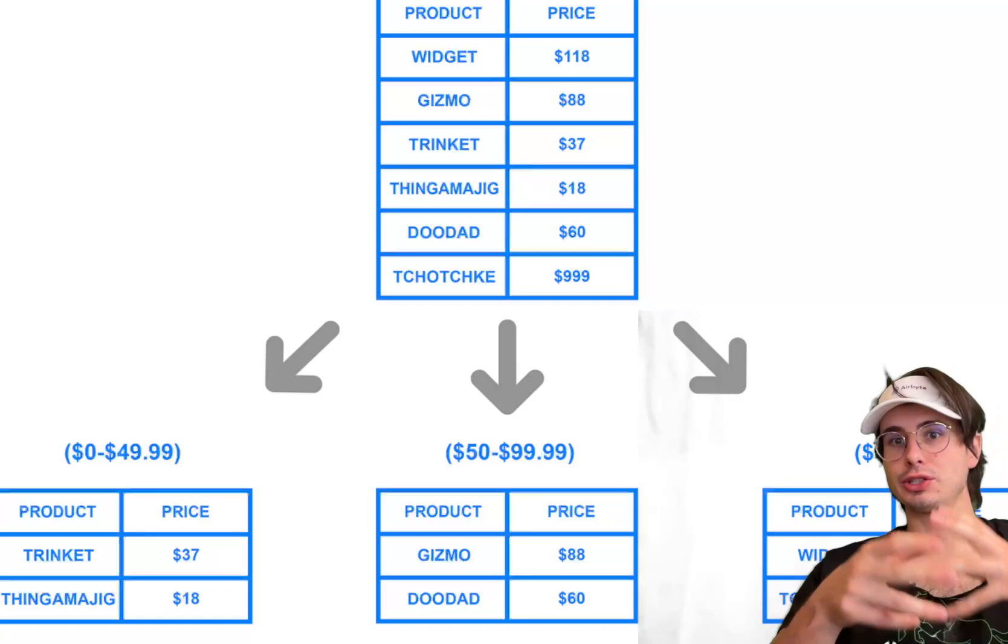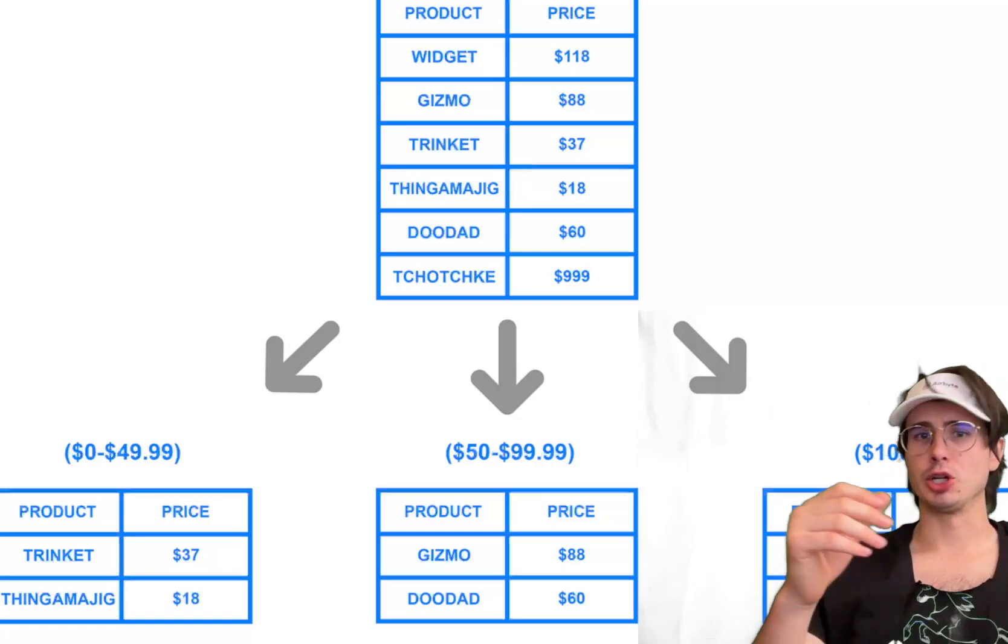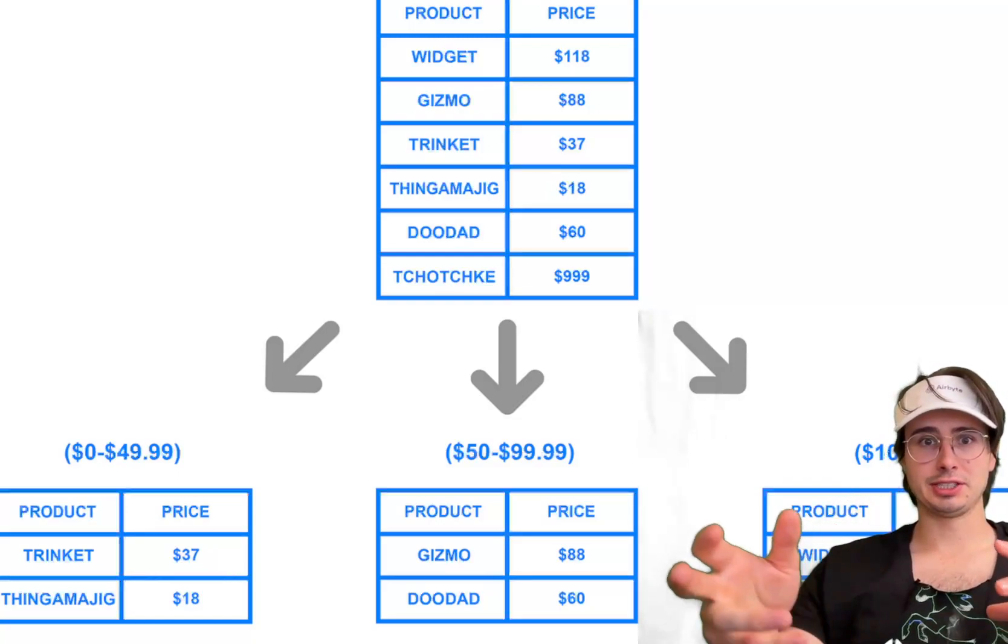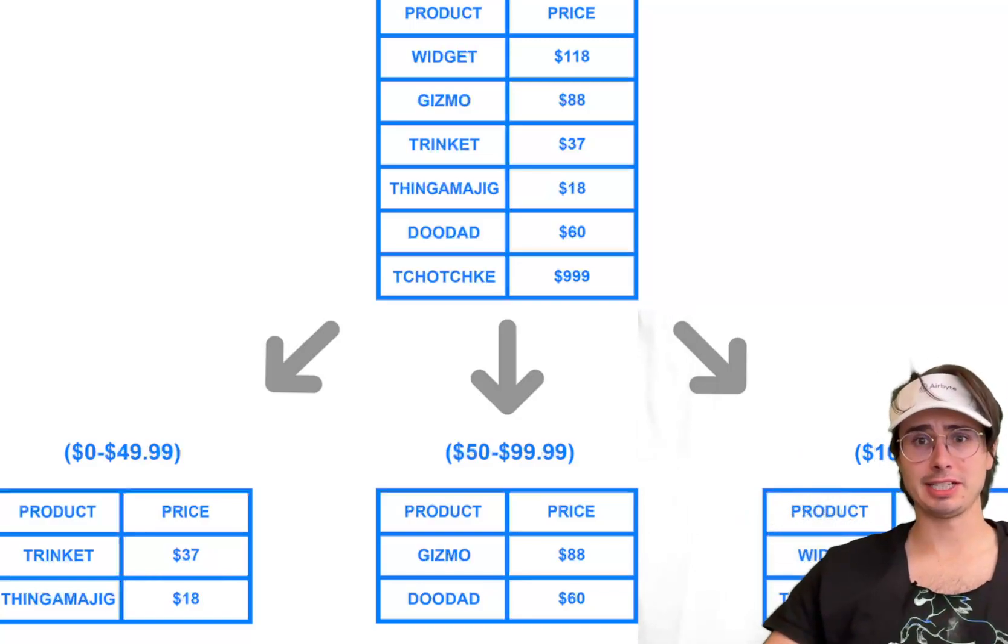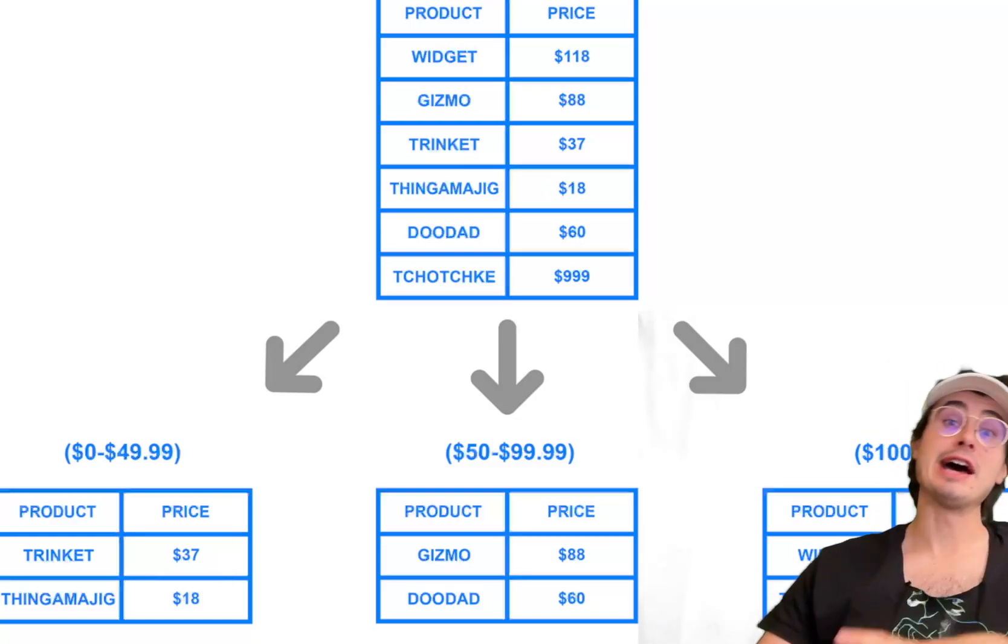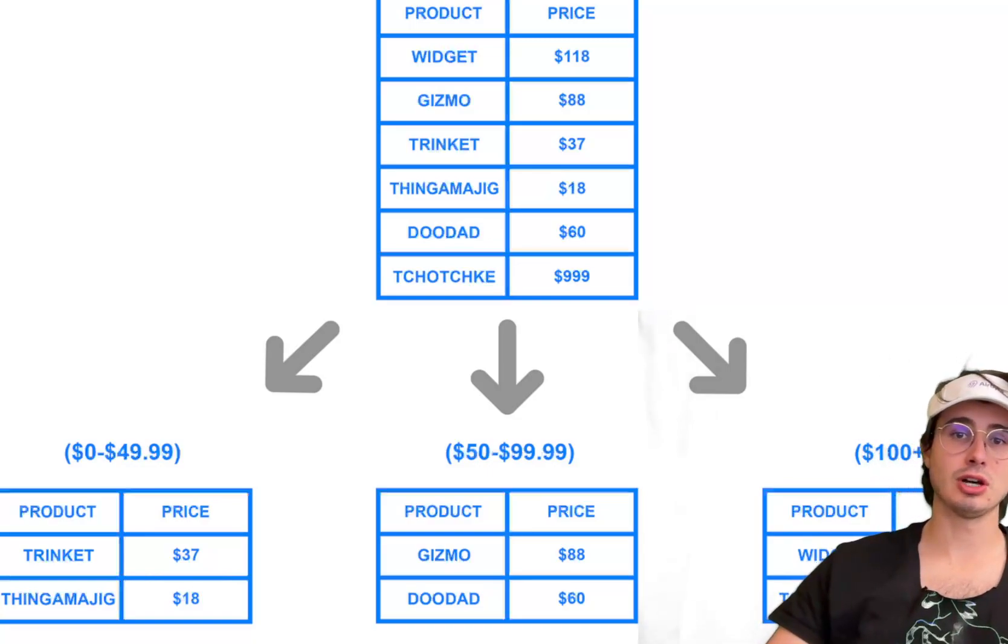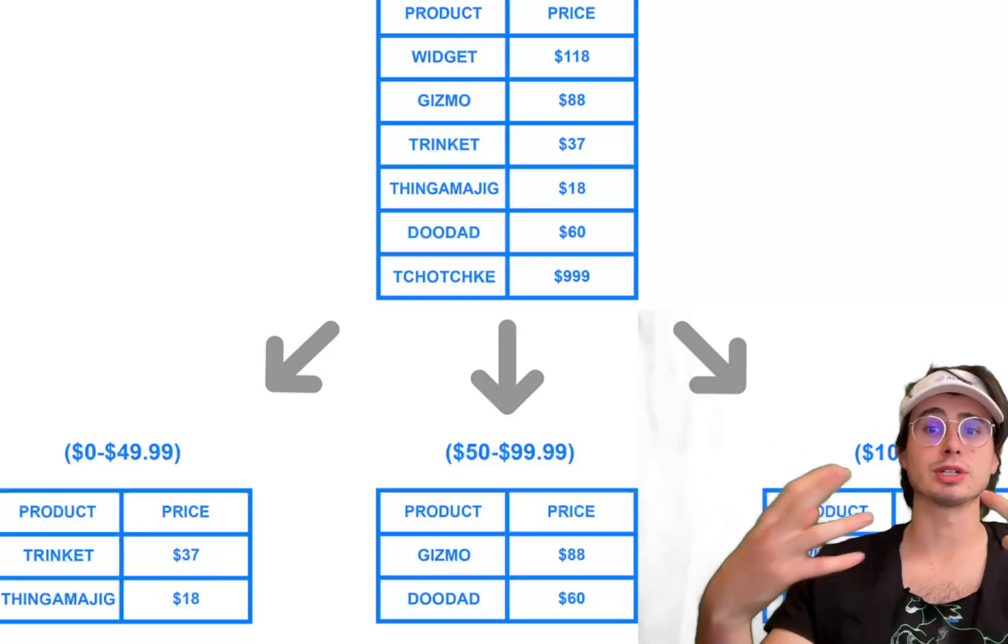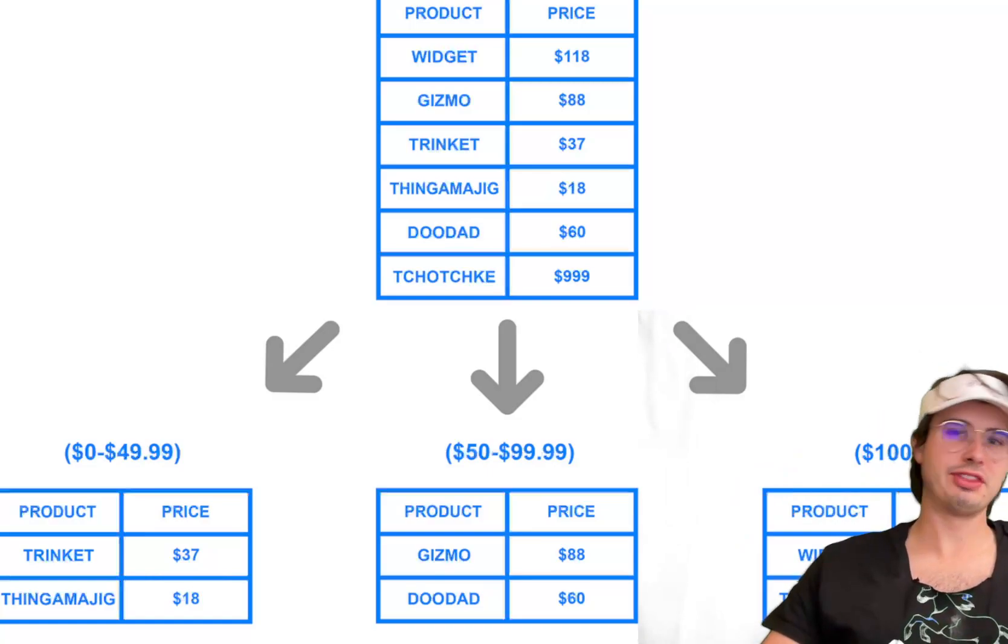At its most basic level, data partitioning is a technique used in database management systems to distribute data across multiple storage devices, multiple nodes or multiple servers. The primary goal of partitioning is to improve the performance, the scalability and the manageability of the database by breaking down those large data sets into smaller more manageable pieces. Then each partition can be processed independently which enables parallel processing and reduces the load on a single storage unit.